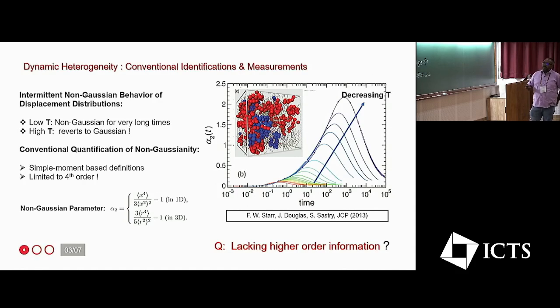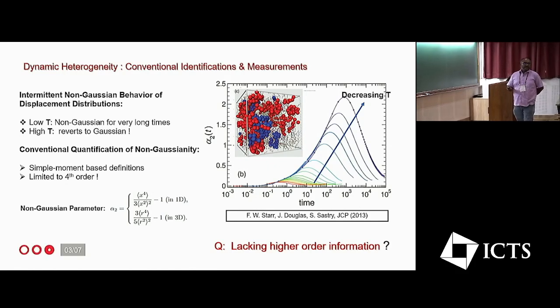So, what happens in this supercooled liquid and the glassy liquids, with time, when we have this kind of intermittent motion, initially there are very small values of the non-Gaussianity. And then it develops some peak and at long times it actually decays.